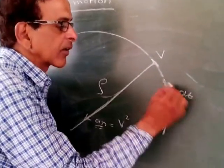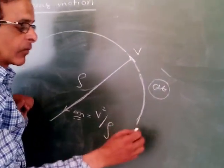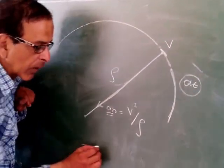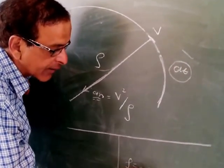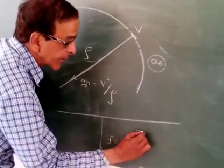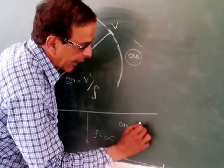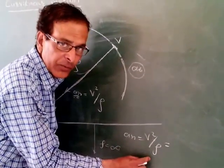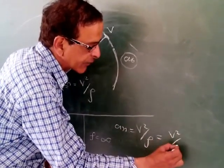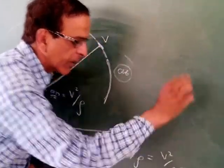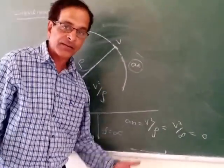The acceleration along the curve path is the tangential acceleration. If the particle moves along a straight line path, the radius of curvature ρ is infinity. Therefore, the normal component of acceleration is zero, because aₙ = v²/ρ, and v² divided by infinity equals zero. So whenever the particle moves along a straight line path, normal acceleration is zero.